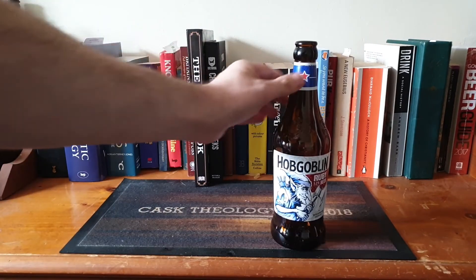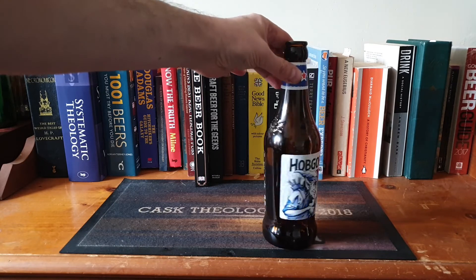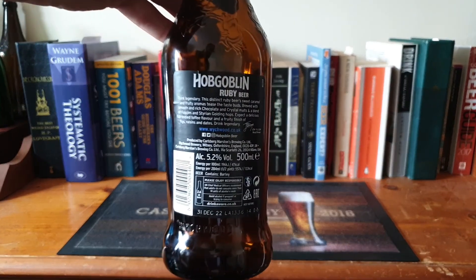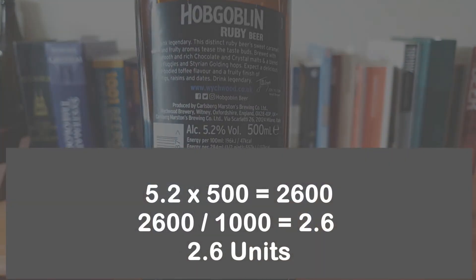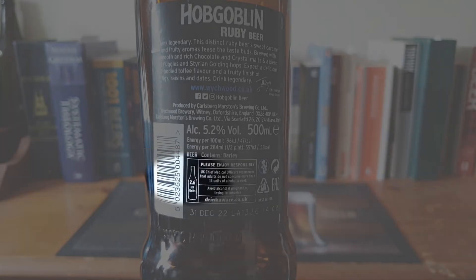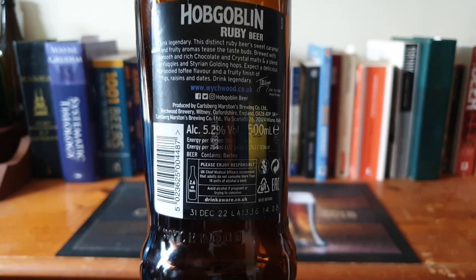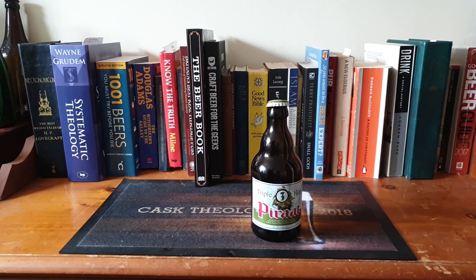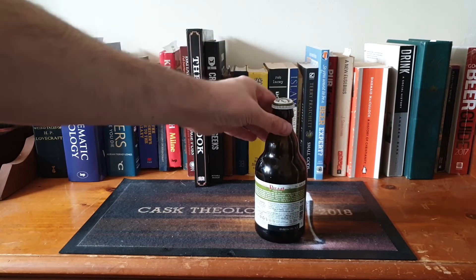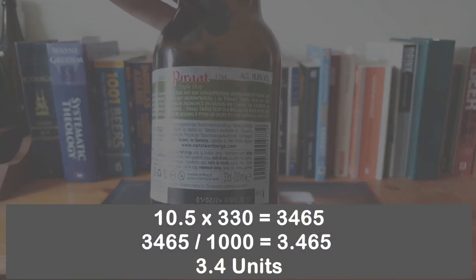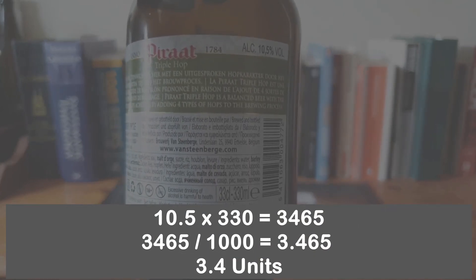As an example, let's work out how many units are in this bottle of Hobgoblin. It is a 500 ml bottle and the ABV is 5.2. We take 5.2, multiply it by 500, and that gives us 2600. We divide that by 1000 and we get 2.6 — so this beer contains 2.6 units, and if we look on the back of the bottle that's exactly what it says. Next, this bottle of Belgian ale doesn't have units printed on it. It's a 330 ml bottle at 10.5% ABV: 10.5 multiplied by 330 is 3465, divided by 1000 gives us 3.4 units.